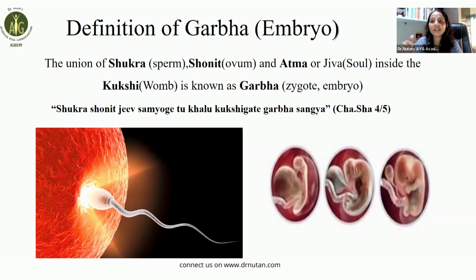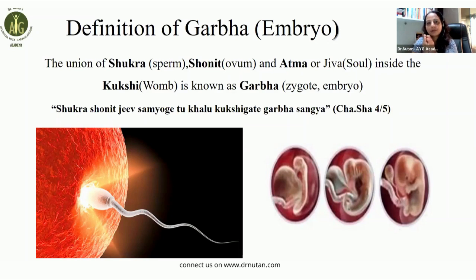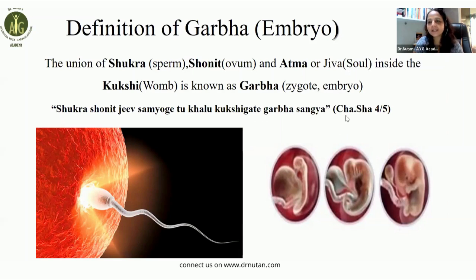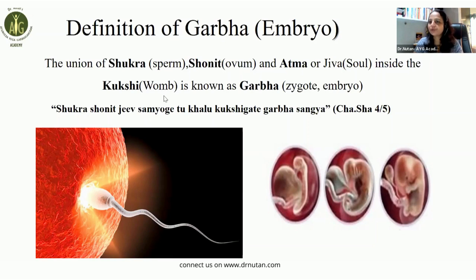When the atma or jiva arrives, only then does life truly begin. The mere integration of shukra and shonit — sperm and ovum — does not create life on its own. In modern books, fertilization is defined simply as the union of sperm and ovum. Kukshi, meaning the womb of the woman, is the Sanskrit term used. Acharya Charak defines this in the Charaka Samhita as shukra, shonita, and jiva together.